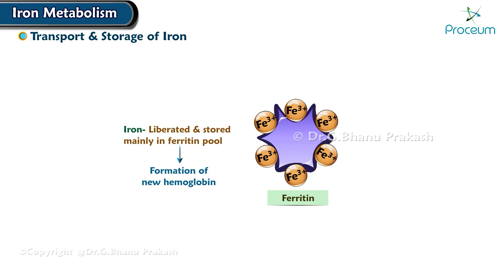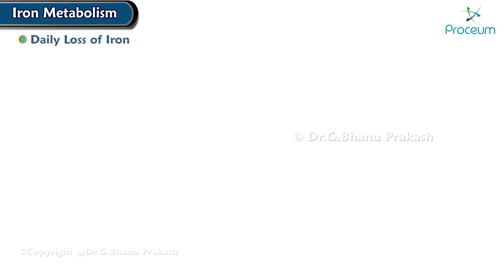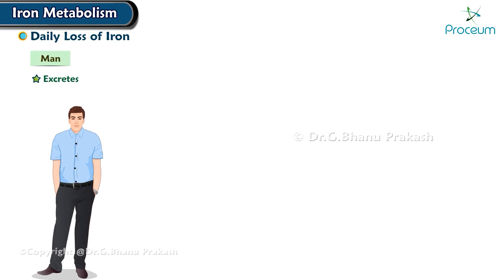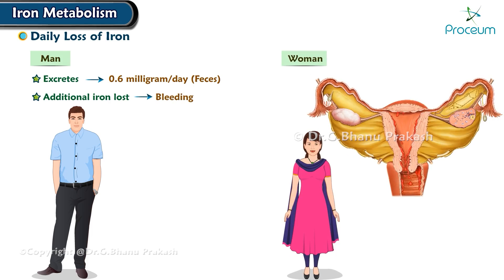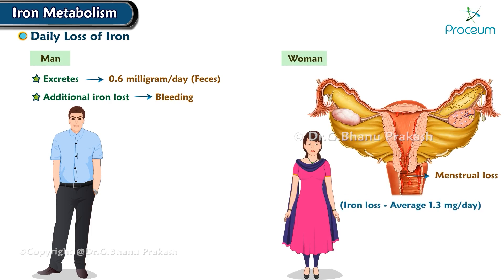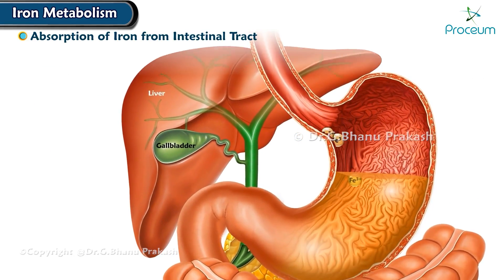Daily loss of iron. A man excretes about 0.6 milligrams of iron each day, mainly into the feces. Additional quantities of iron are lost when bleeding occurs. For a woman, additional menstrual loss of blood brings long-term iron loss to an average of about 1.3 milligrams per day.